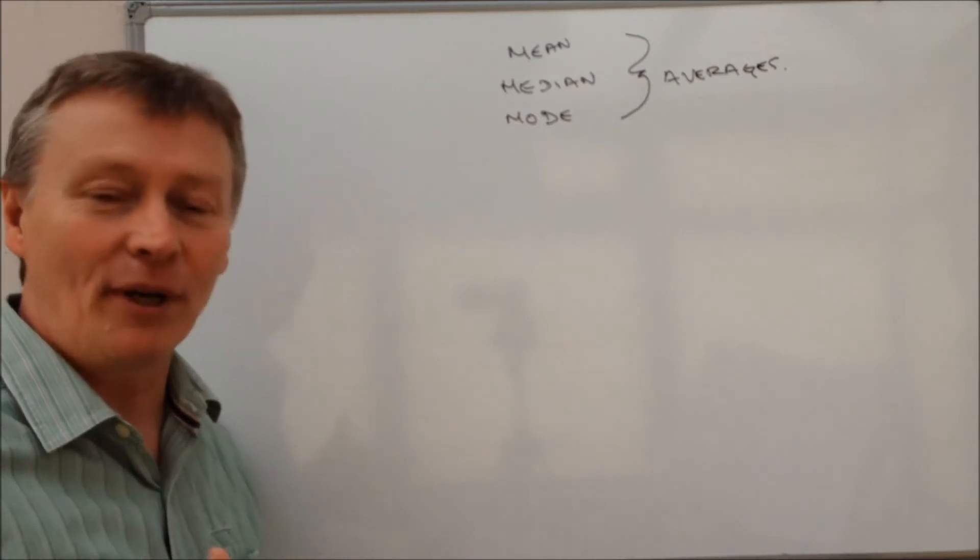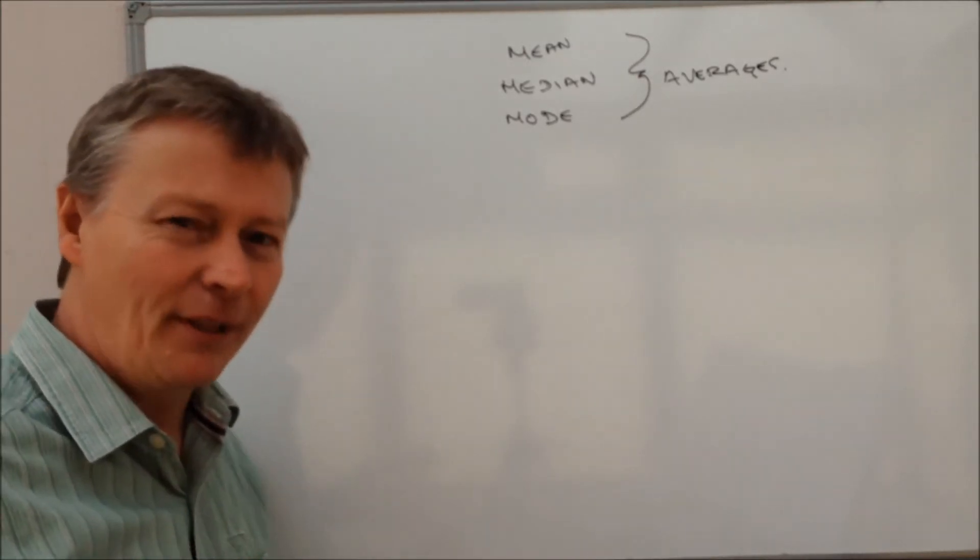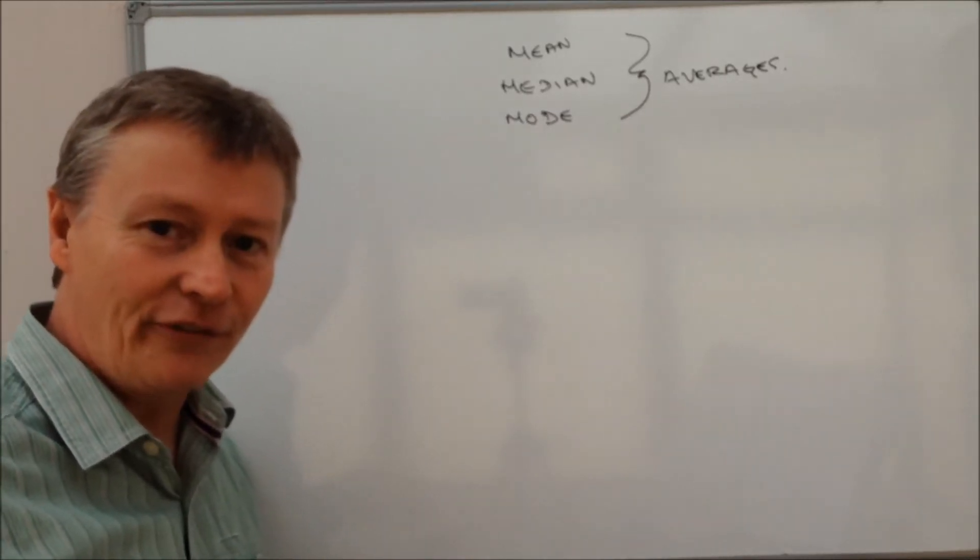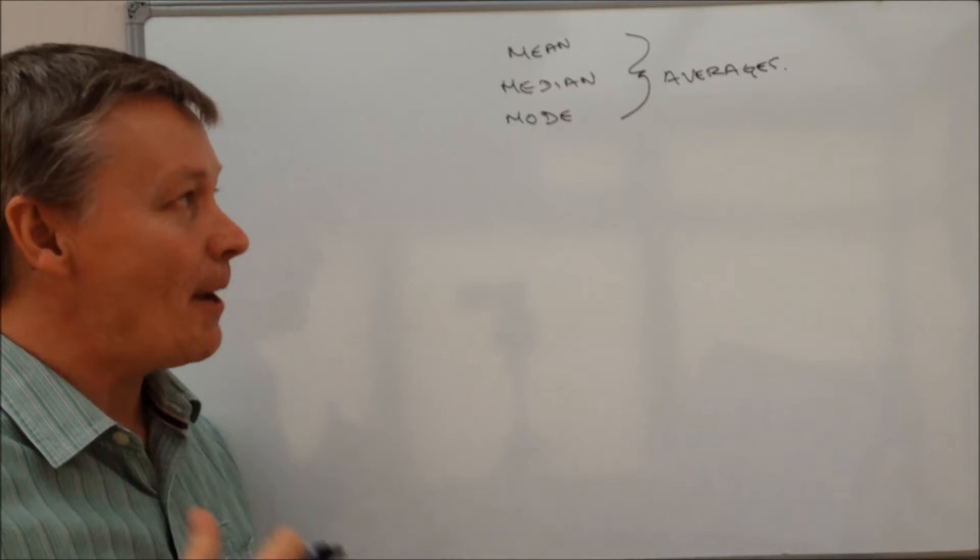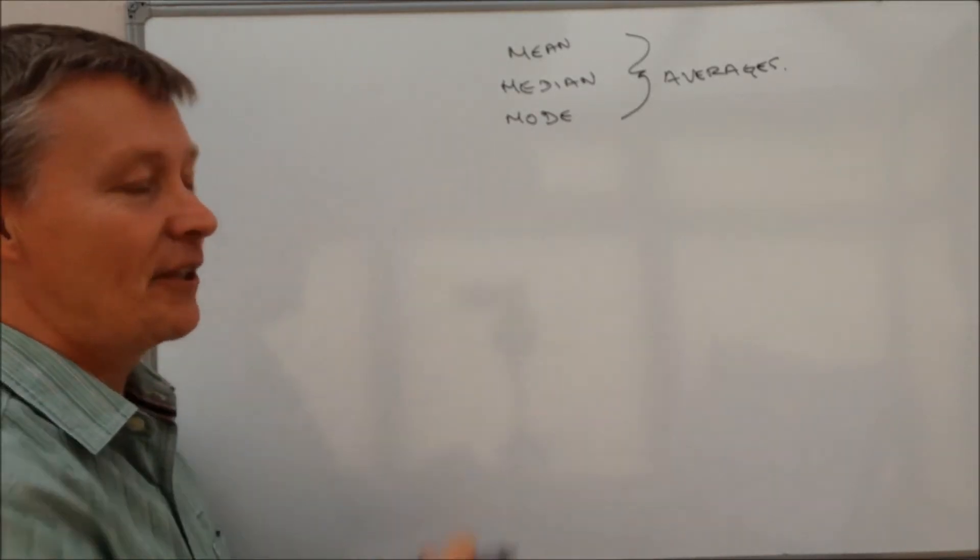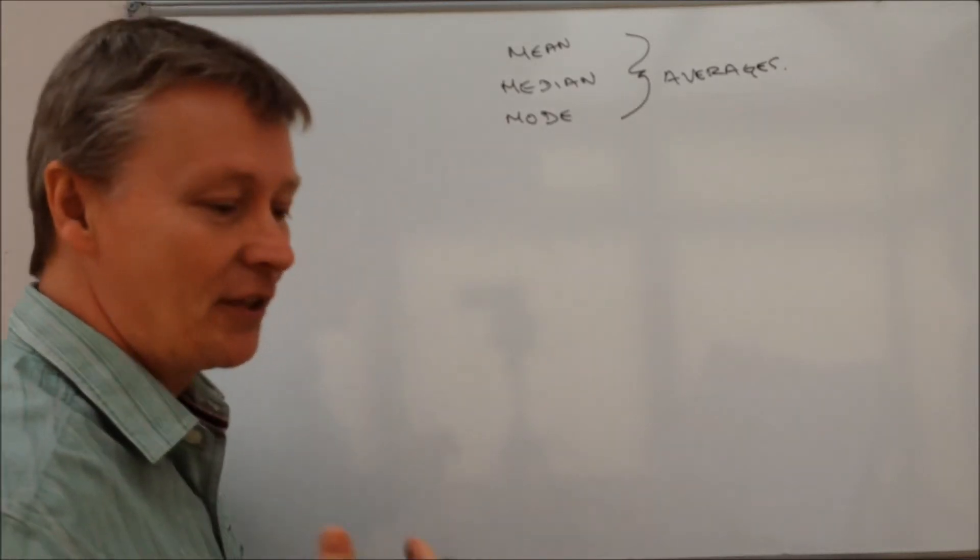However, some of the exam paper questions that you get on these types of questions don't always make the meanings particularly clear. But I'm going to give you an example of a relatively straightforward exam paper question that just asks you to write down the mean, median, and mode for each of these sums of numbers or each of these numbers.